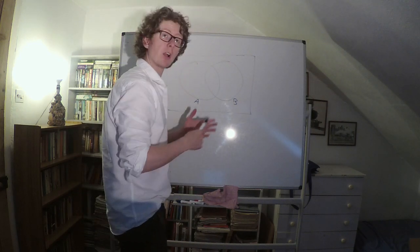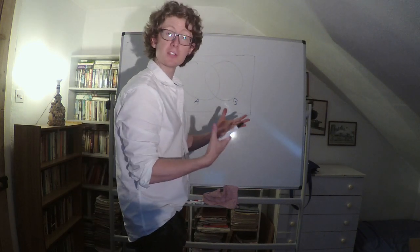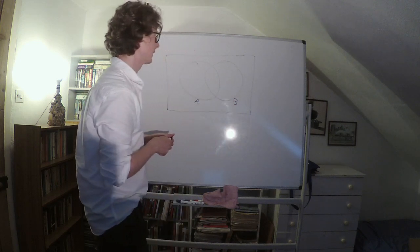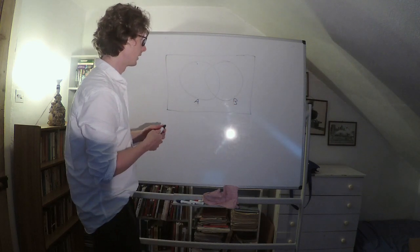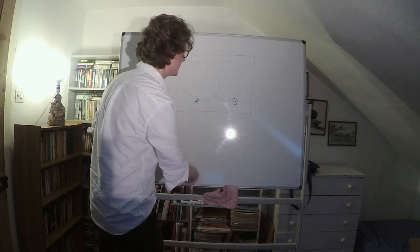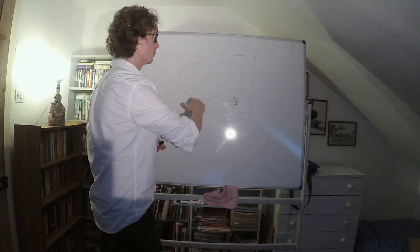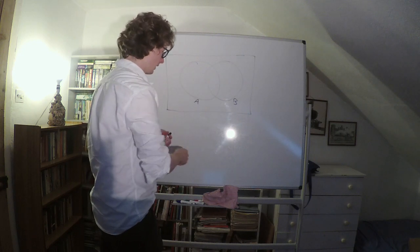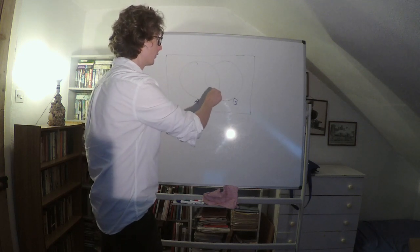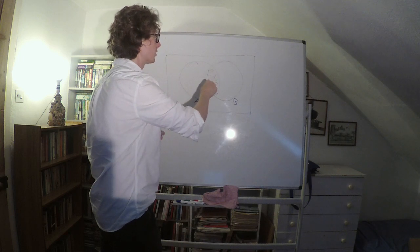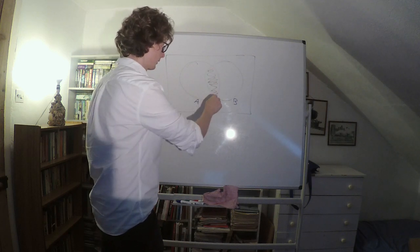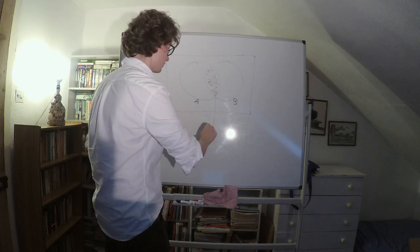There are a number of basic relationships between sets pictured here. One thing you can see is that the sets overlap. We'll call the area where they overlap their intersection.